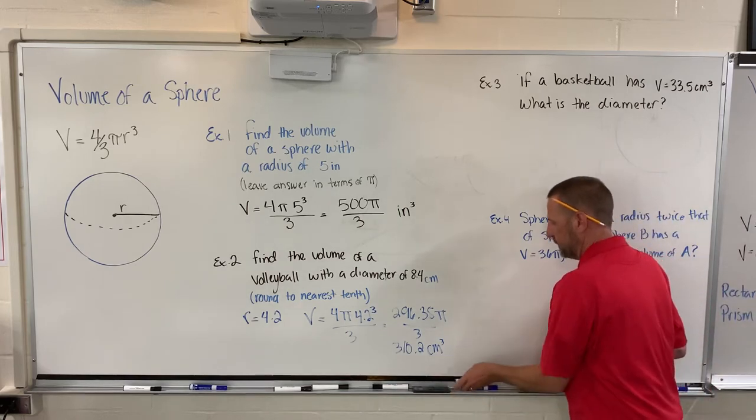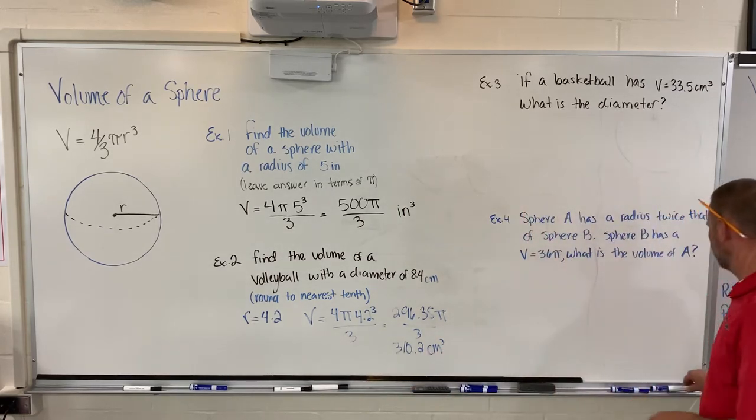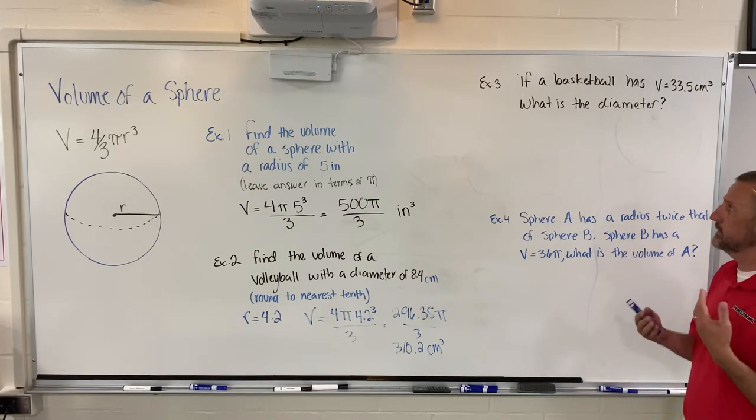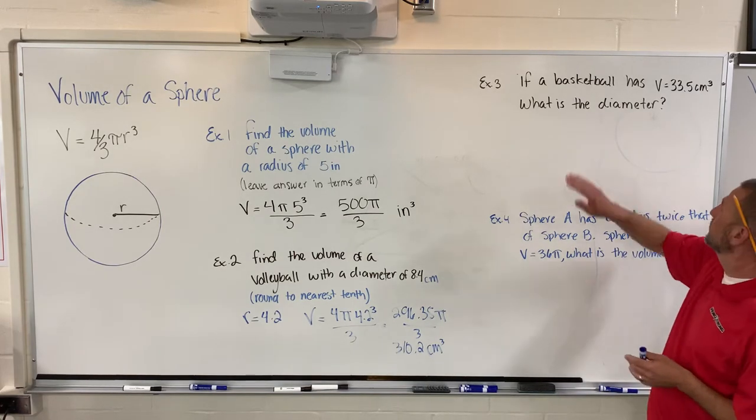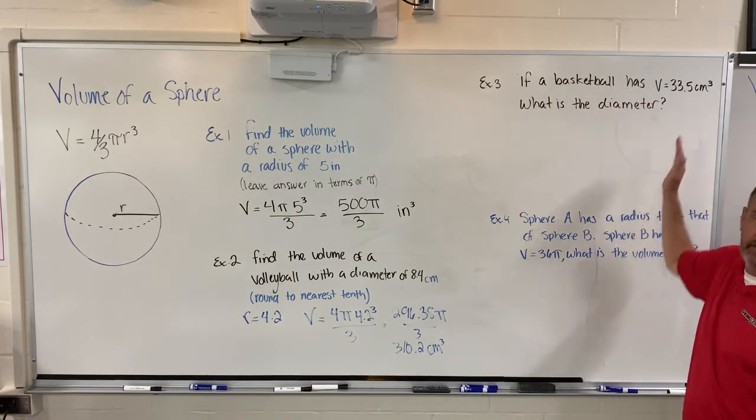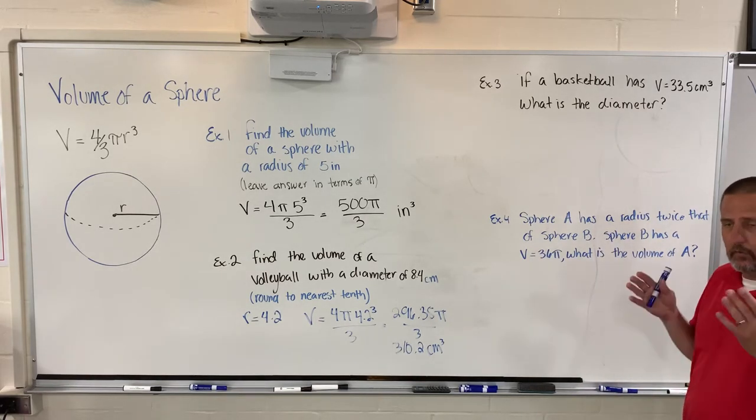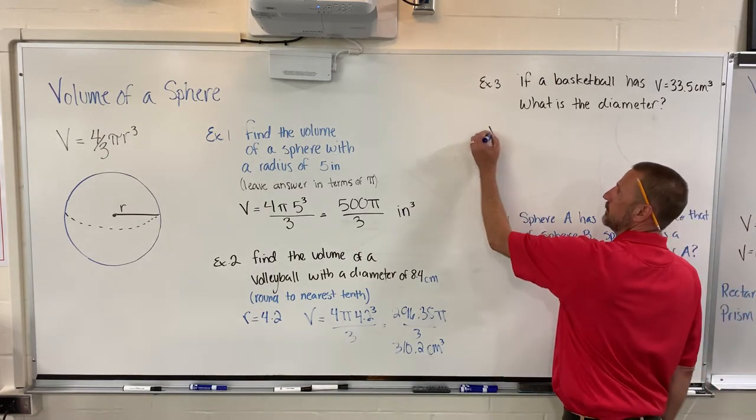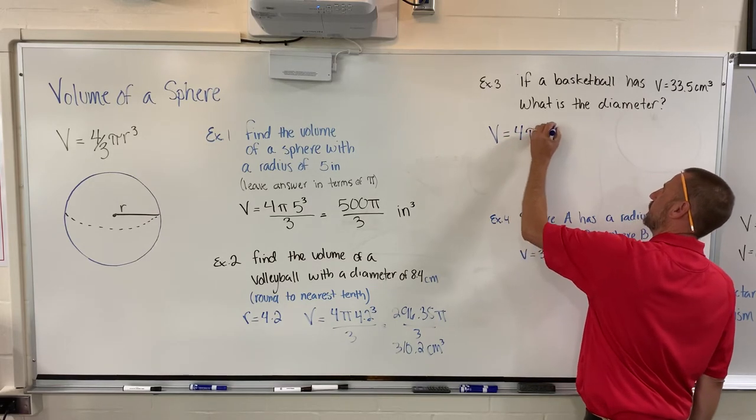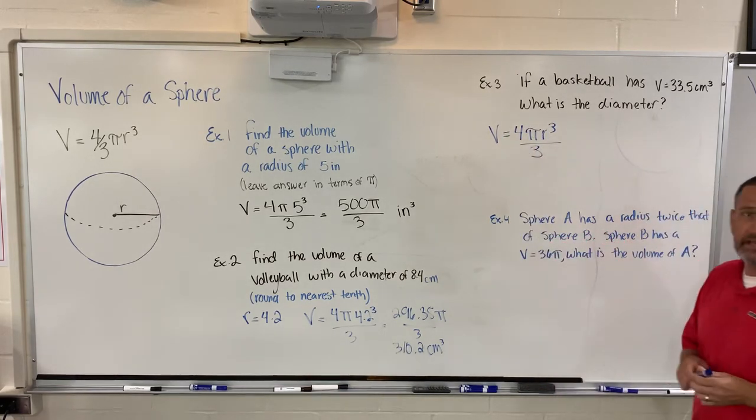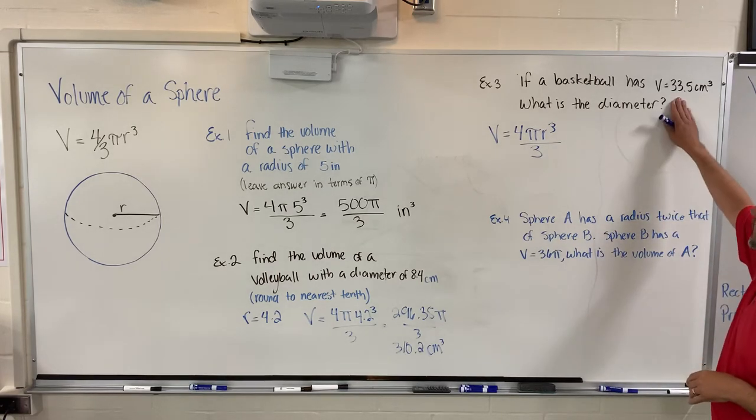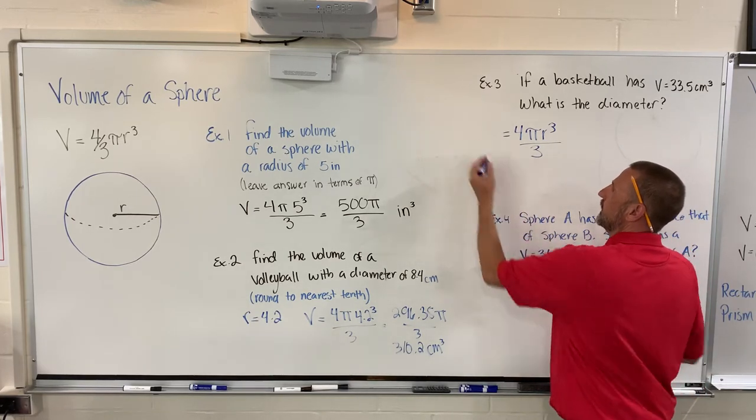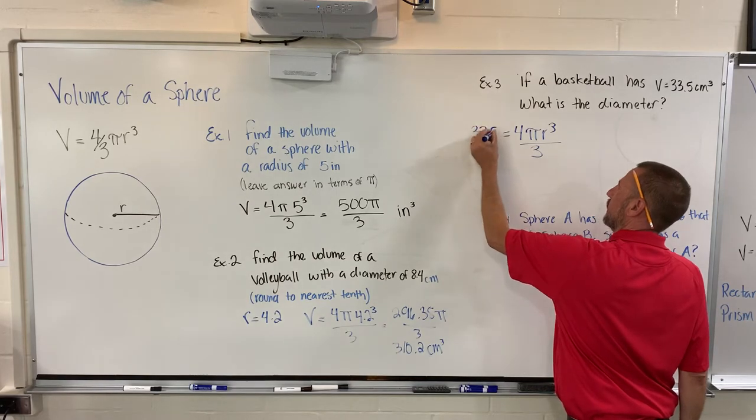That brings me to the next problem that is most likely going to be found on any type of big standardized test, and that is the whole concept of working backwards. What if I give you the volume and I ask you to figure out the diameter? Anytime you have a situation like this - if it says a basketball has a volume of - you need to start with what shape is the basketball, write that formula down, and then start plugging away at it. So I know my formula should be 4 pi r cubed over 3, and now what I do know is that my volume is 33.5, so it's okay for me to erase the V and write 33.5.